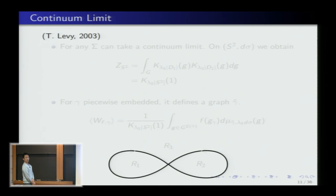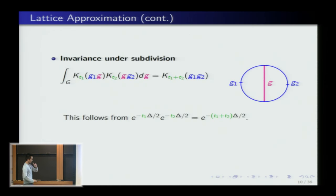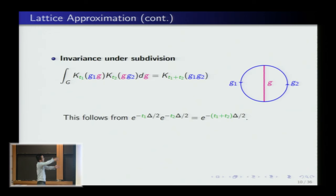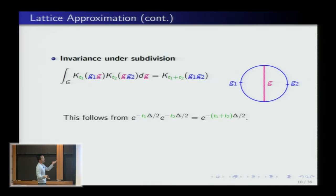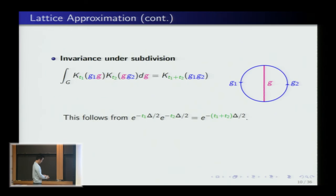Two dimensions is crucial because in two dimensions edges have a left and right, and faces have an inside and outside. In three dimensions, an edge meets more than one plaquette — you'd have top-down, left-right — and then you'd have four heat kernels and you're stuck. You can still define the action, but you wouldn't have invariance under subdivision. So two dimensions is special.